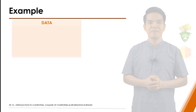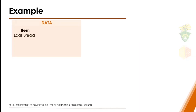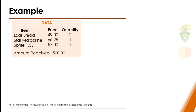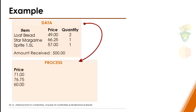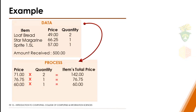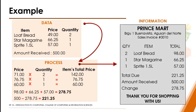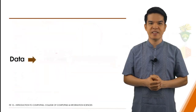Here we have data: the items ordered — loaf bread, margarine, Sprite — along with the price and quantity of each product, and the amount received, which is 500 pesos. The total amount to be paid is 278 pesos and 75 cents. The computer processes the data by multiplying the price and quantity of each item to compute each item's total price, then adds all the items' total prices and calculates the change by subtracting the total amount to be paid from 500 pesos. With the data being processed, the computer produces the needed information: the cash register receipt.